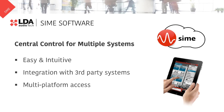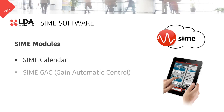Besides the basic module of SIME, LDA offers other modules to make the solution more appealing. For example, SIME Calendar helps us to schedule events by time and date. SIME GAC sets the gain automatically for a zone depending on the ambient noise. This is a great solution for noisy environments such as train stations or shopping malls.